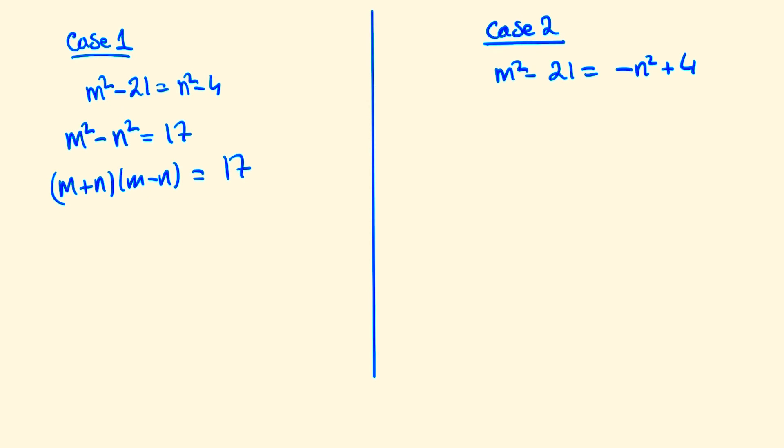This leaves us with another four possible cases: that is, m + n will be 1×17, 17×1, or -1×-17, and -17×-1.